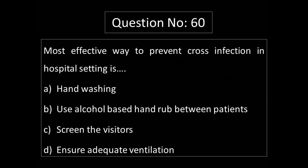Question number 60: The most effective way to prevent cross infection in a hospital setting is — Option A: hand washing. Option B: use alcohol-based hand rub between patients. Option C: screen the visitors. Option D: ensure adequate ventilation. Hand washing is the most effective way to prevent cross infection.